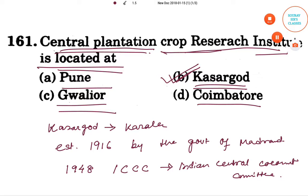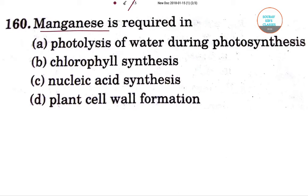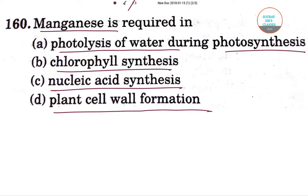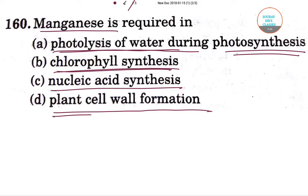This question is about manganese and what it is required for. The options are: photolysis of water during photosynthesis, chlorophyll synthesis, nucleic acid synthesis, and plant cell wall formation.